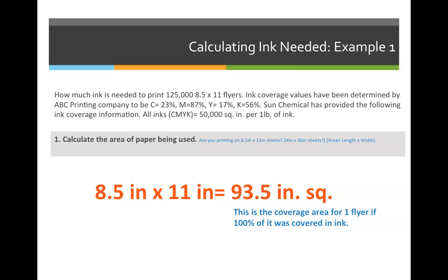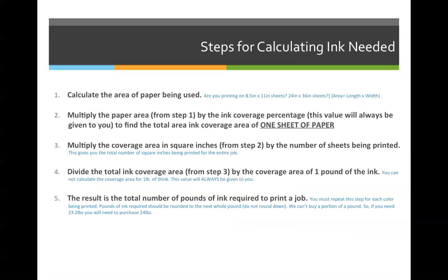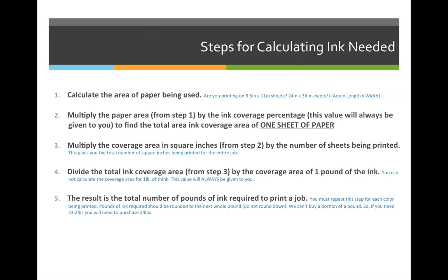So every one pound of ink will cover 50,000 square inches of paper. Going back to our step-by-step process, you can either reference this slide or I will give you the numbers again as we go through it. Step one: calculate the area of the paper being used. We are printing 8.5 x 11 flyers, so we multiply 8.5 x 11 for a total area of 93.5 inches squared.